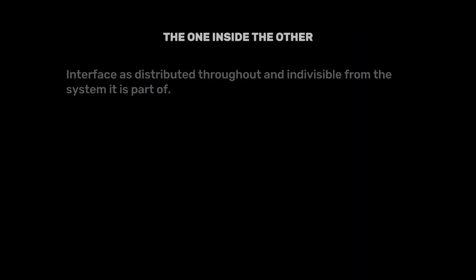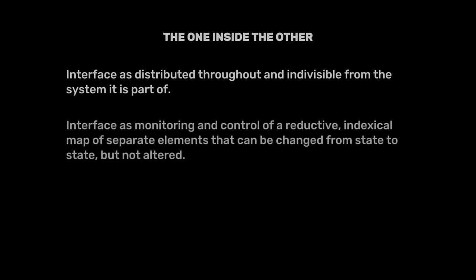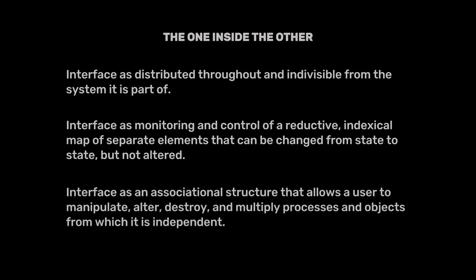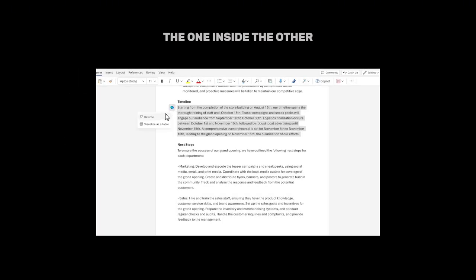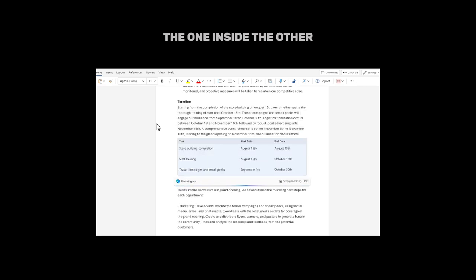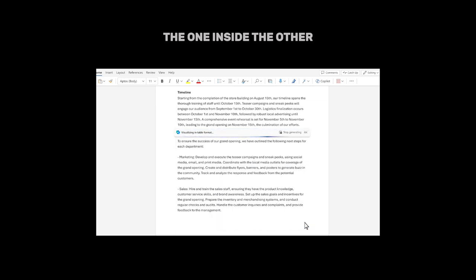These categories are not isolated — they often function within and overlap each other. This integration can be observed in common applications like word processors, where different interface types interact seamlessly. For example, a word processor displays text, which is a visual representation; tracks user input, which is a form of monitoring; and provides tools for text manipulation, which is the independent operations.